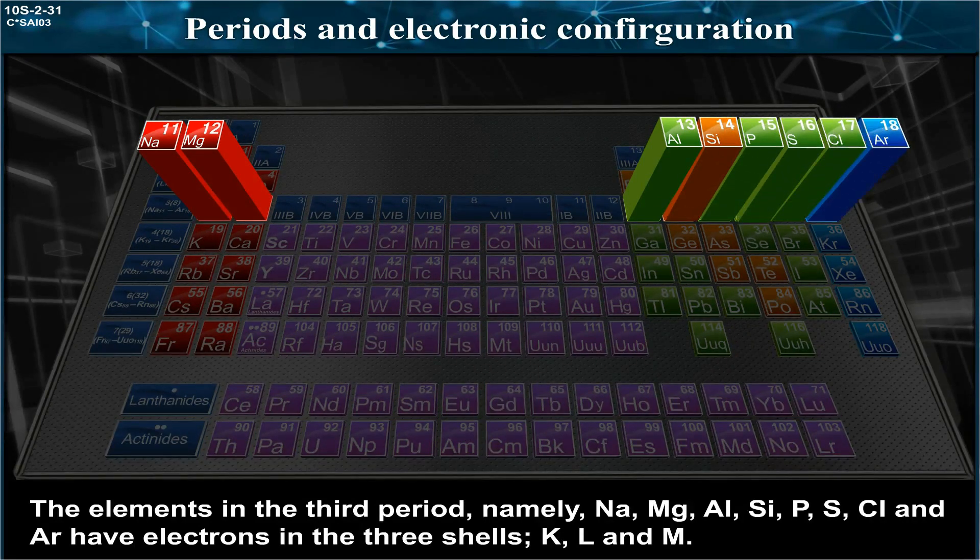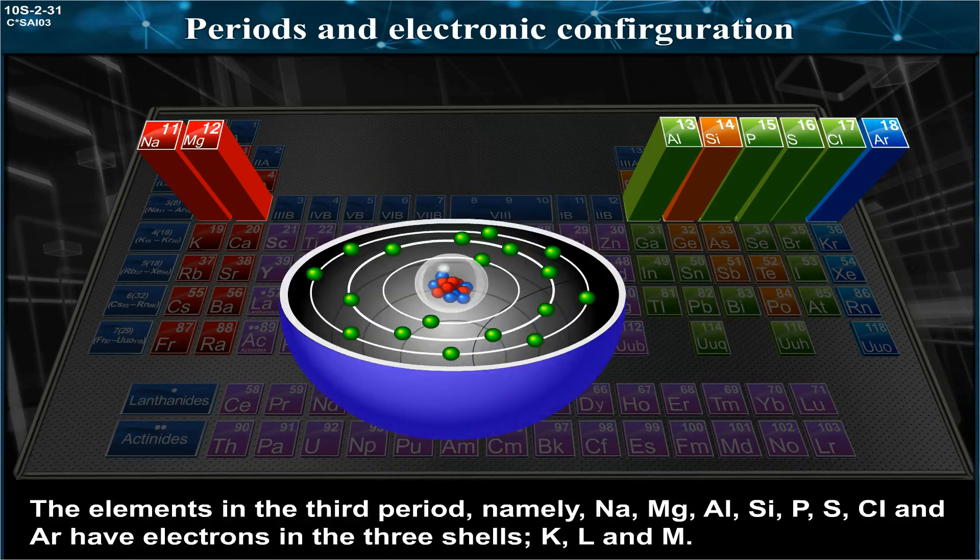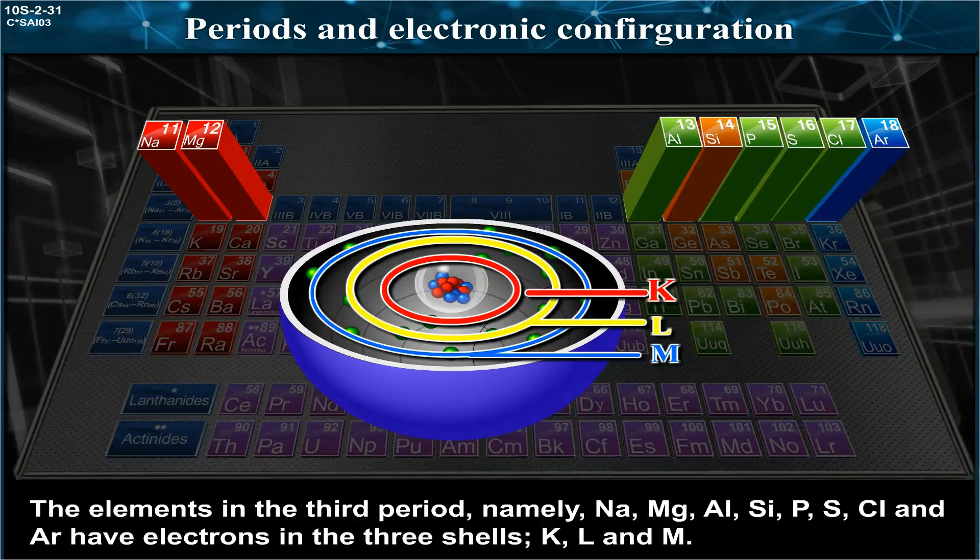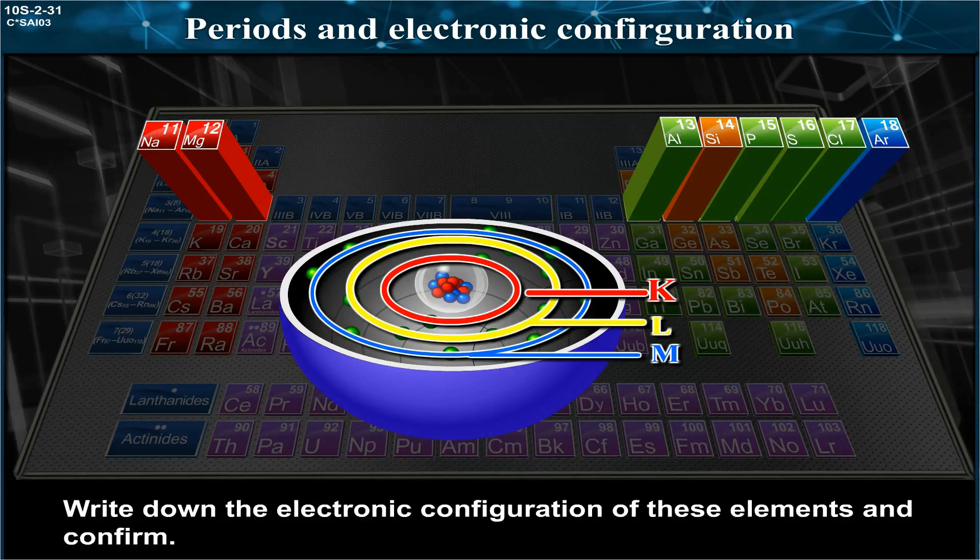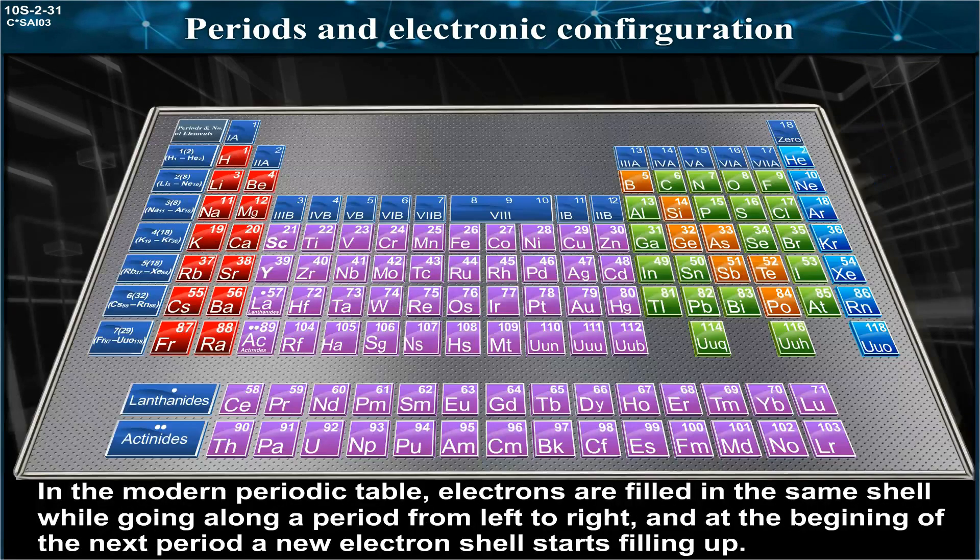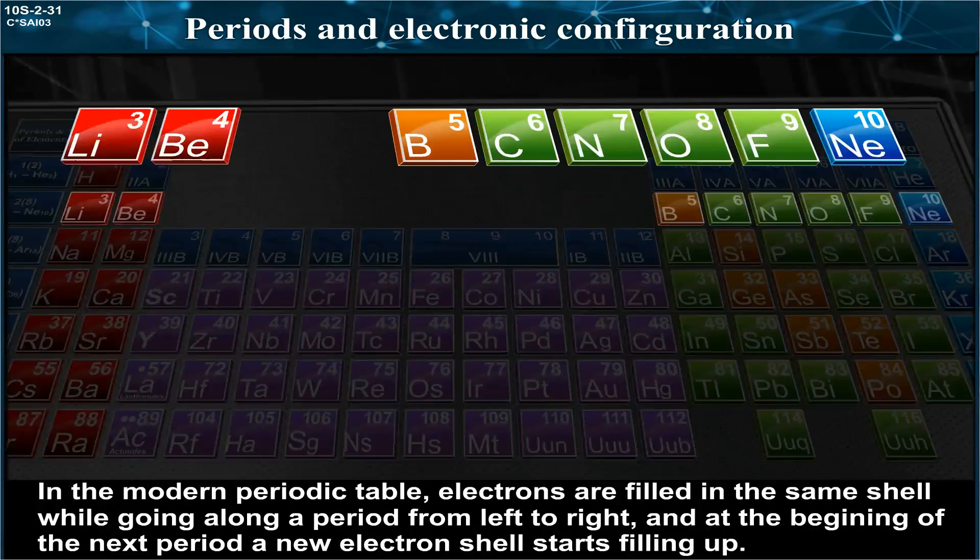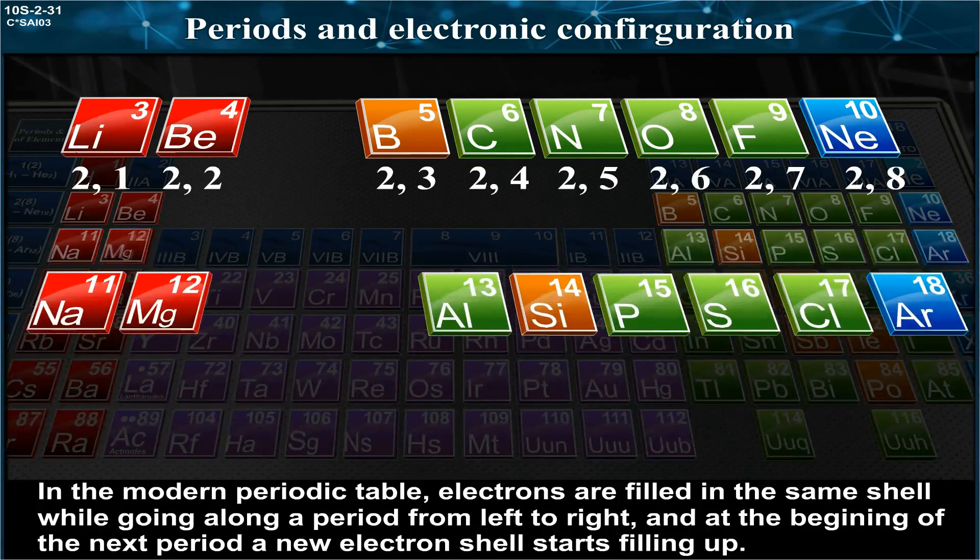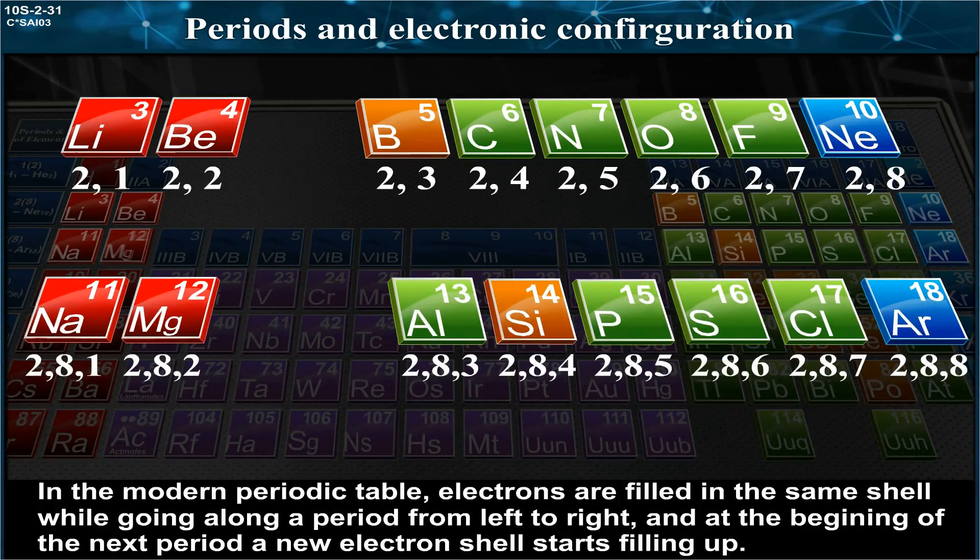Cl and Ar have electrons in the three shells K, L, and M. Write down the electronic configuration of these elements and confirm. In the modern periodic table, electrons are filled in the same shell while going along a period.